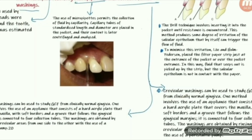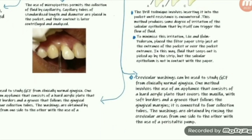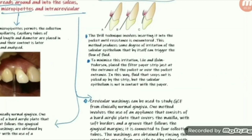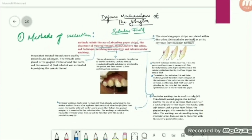The fourth method is crevicular washing. This method is used for clinically normal gingiva. One method involves use of an appliance consisting of a hard acrylic plate that covers the maxilla with borders and grooves following the gingival margin, connected to four tubes. The washings are obtained by rinsing the crevicular areas from one side to the other using a peristaltic pump.